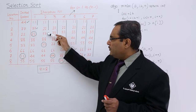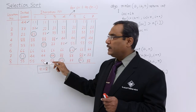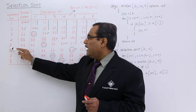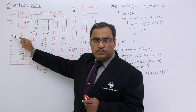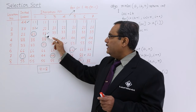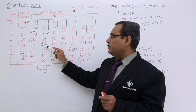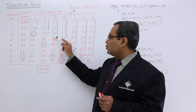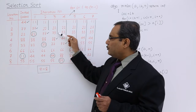Now from 3 to 8, what is the location number of the minimum data? Here the location number is 5. Is 5 equal to the lower bound 3? No. So whatever we are having at the third location will be swapped with the data at the fifth location. So they have got swapped, and the array has been sorted up to this point.